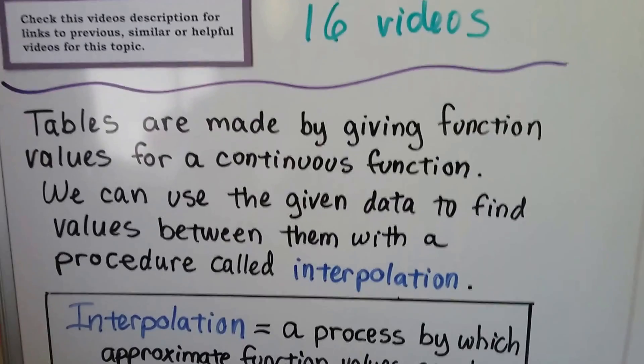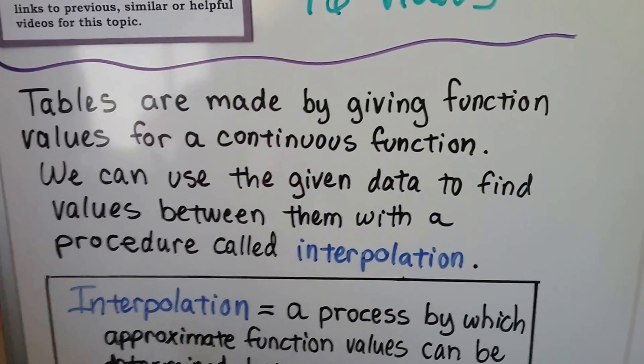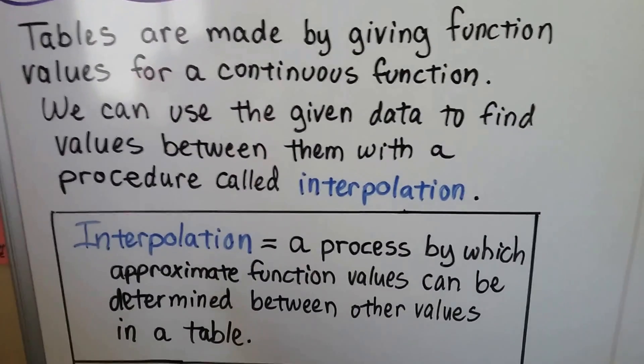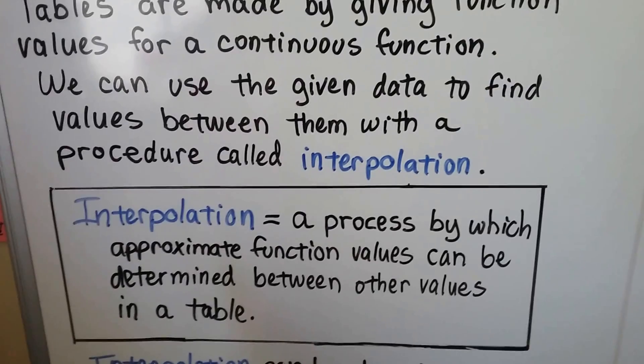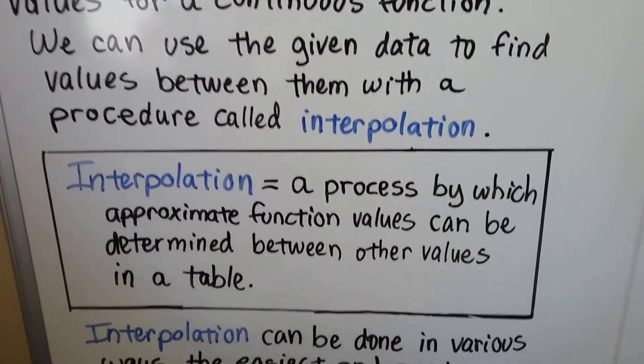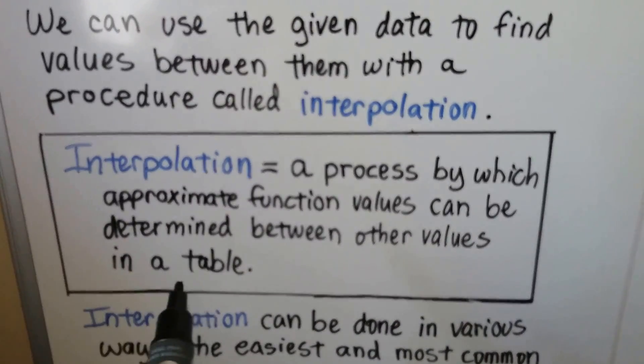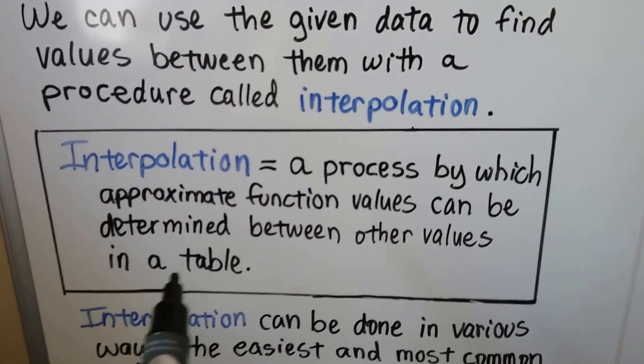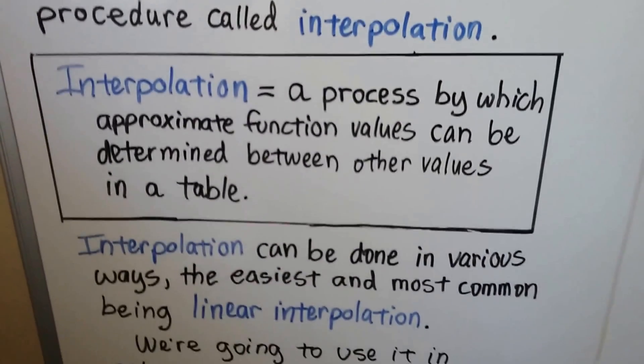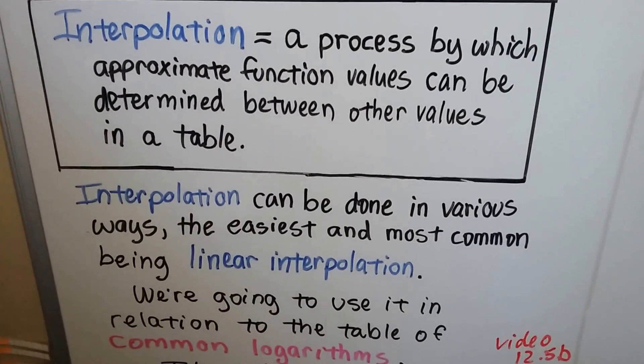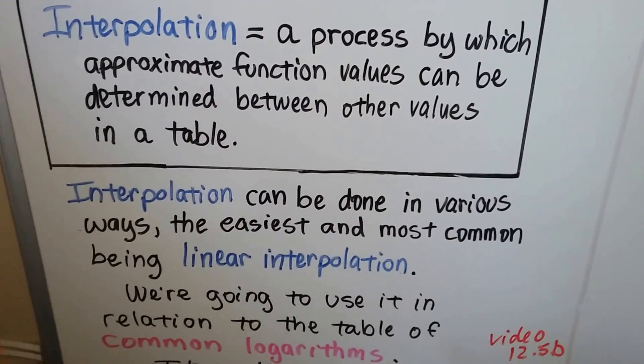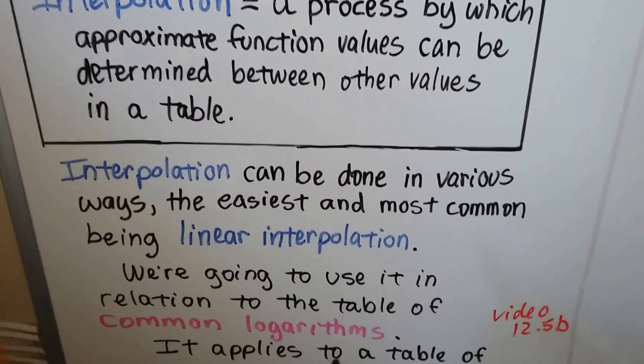As I said in the previous video, tables are made by giving function values for a continuous function, and we can use the given data to find values between them with a procedure called interpolation. It's just this method that you find approximate function values that are between other values on a table.